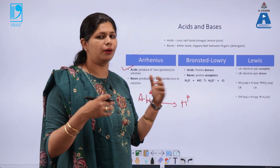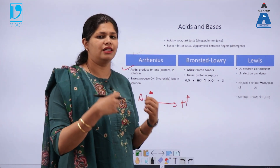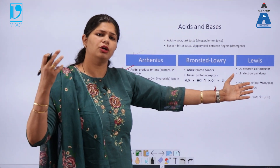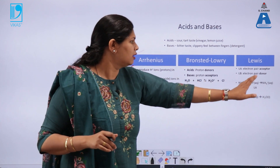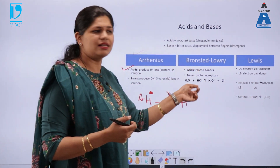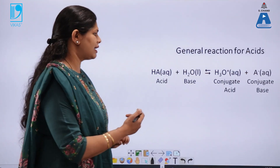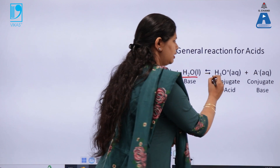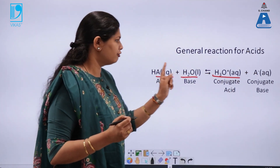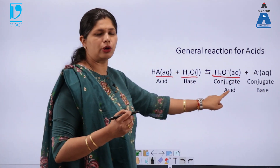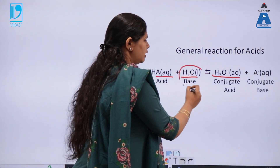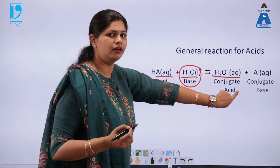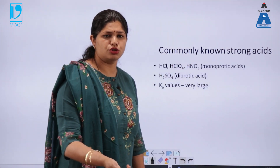Brønsted gave the concept that acids are proton donors whereas bases are proton acceptors. Ammonia is a Brønsted base because it accepts H⁺ ions to form ammonium ion. The Lewis concept talks about electron pair donation and acceptance: acids are electron pair acceptors and bases are electron pair donors. In aqueous media, an acid reacts with water to form hydronium ion (H₃O⁺) and A⁻. The acid forms the conjugate base, and water — acting as the base — forms the conjugate acid, the hydronium ion.